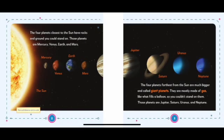The four planets closest to the sun have rocks and ground you could stand on. The four planets farthest from the sun are much bigger and called giant planets. They are mostly made of gas, like what fills a balloon, so you couldn't stand on them. Those planets are Jupiter, Saturn, Uranus, and Neptune.